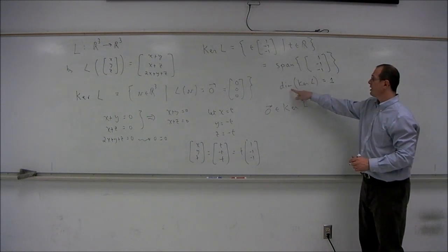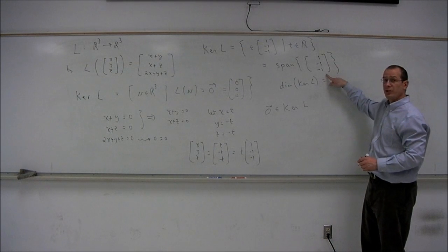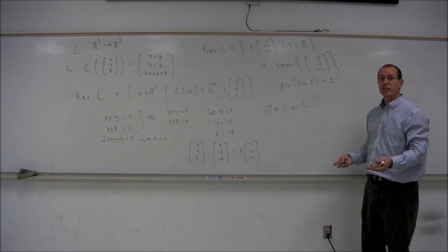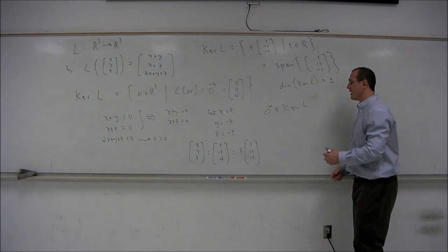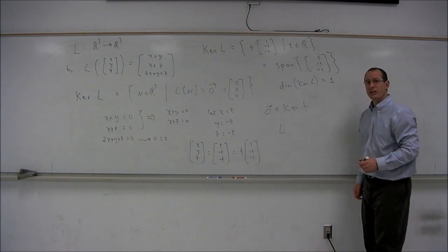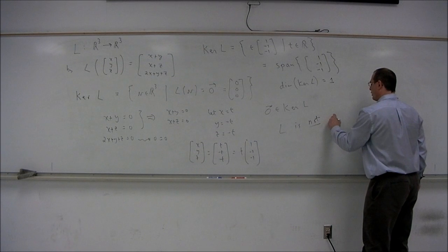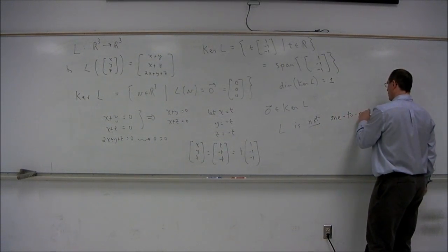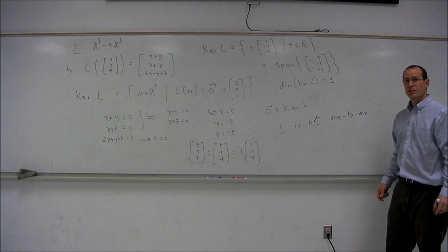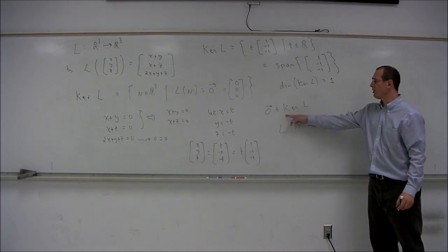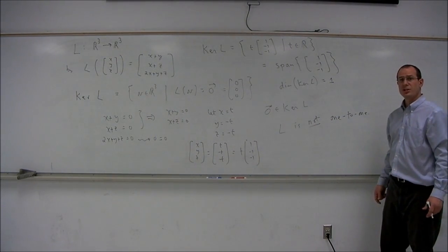Now, in this case, there are many other vectors in the kernel, including this one that you see here. When the kernel contains more vectors than just the zero vector, that means the linear transformation L is not one-to-one. The linear transformation is not one-to-one if the kernel contains more than just the zero vector.